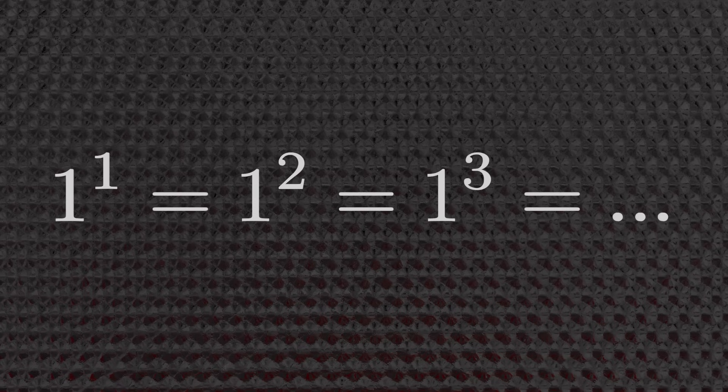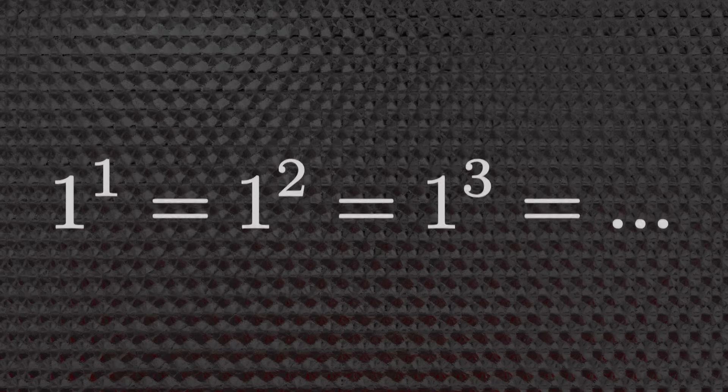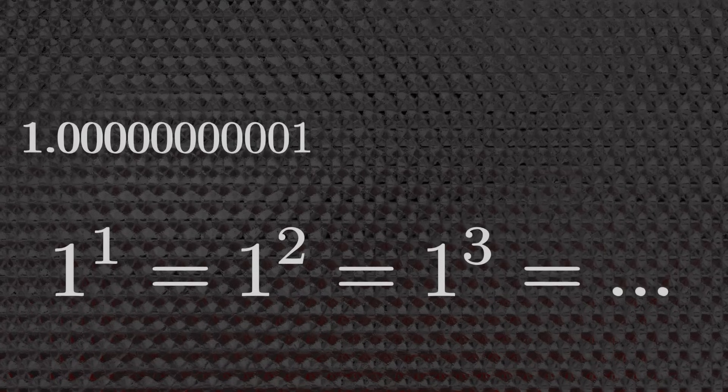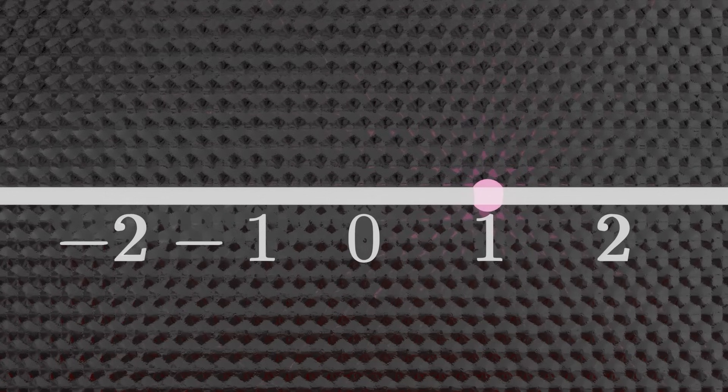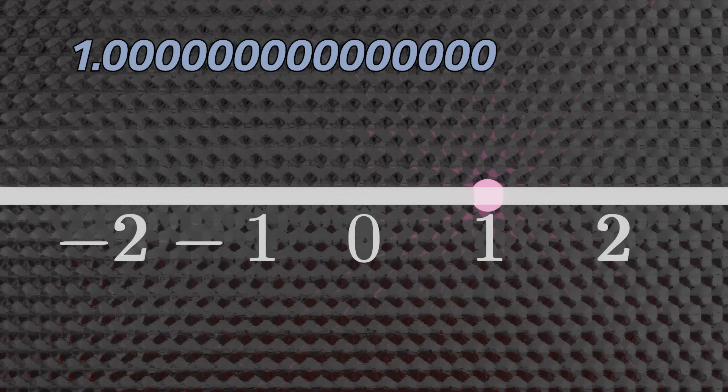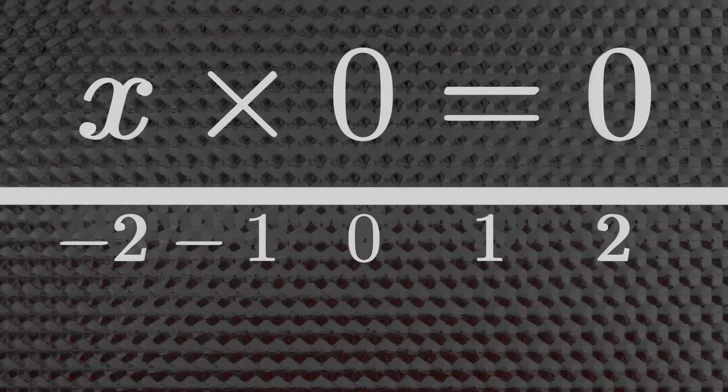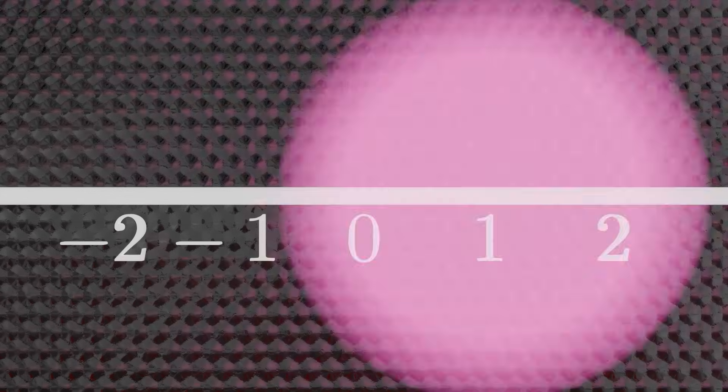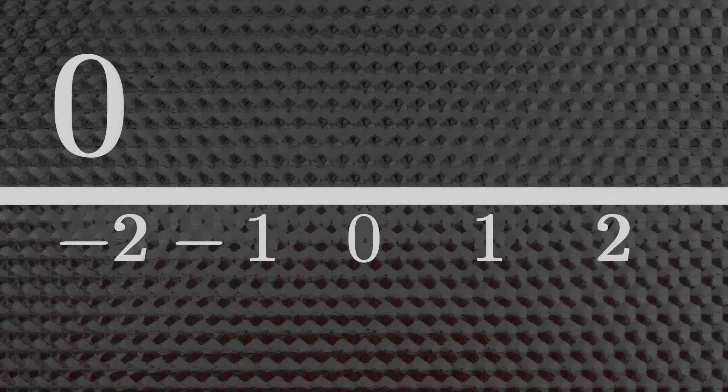Exponentiations have this really fun quality: their fixed point is 1. So 1 to the first power equals 1 to the second, equals 1 to the third, and so on — it keeps going no matter what power you bring it to. However, if you add just 0.000...001 to that 1, then you can reach everything. So on the number line, exponents of 1 can only reach 1, but exponents of 1.0000000000000001 open up everything else.